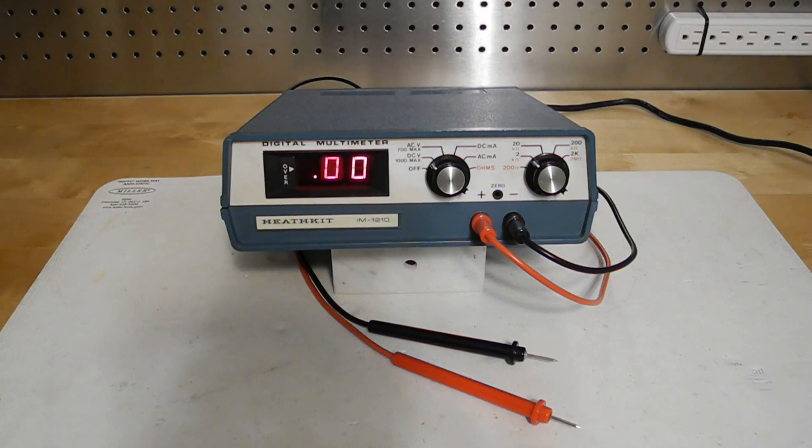In this video, we'll take a look at a piece of vintage Heathkit test equipment, the IM-1210 digital multimeter. I'll discuss the history and features of the instrument, and we'll look at the front panel controls and inside circuitry. I'll discuss the restoration of this particular unit and say something about the circuit design it used. We'll see a demonstration of the multimeter operation and then wrap things up with a summary.